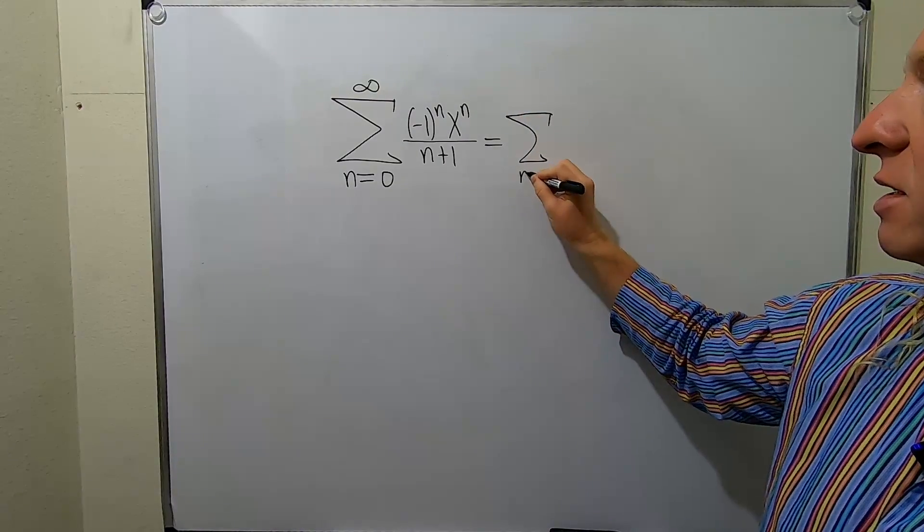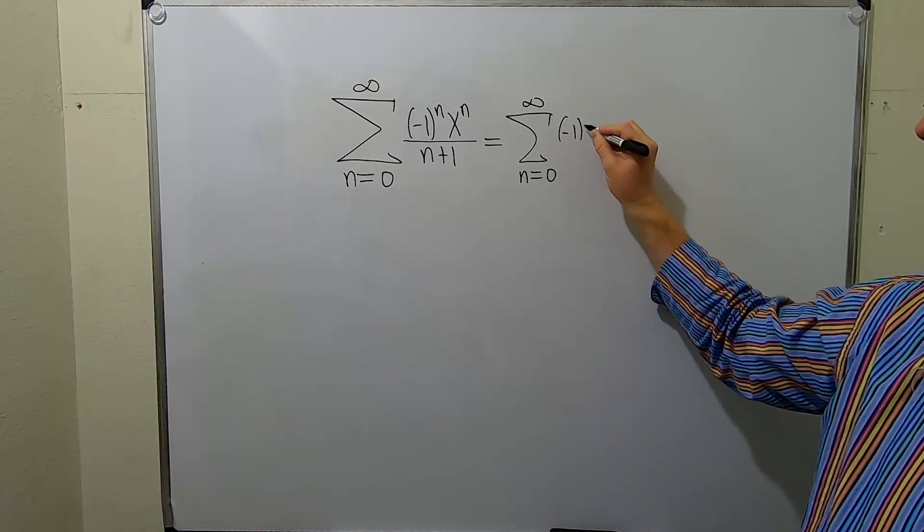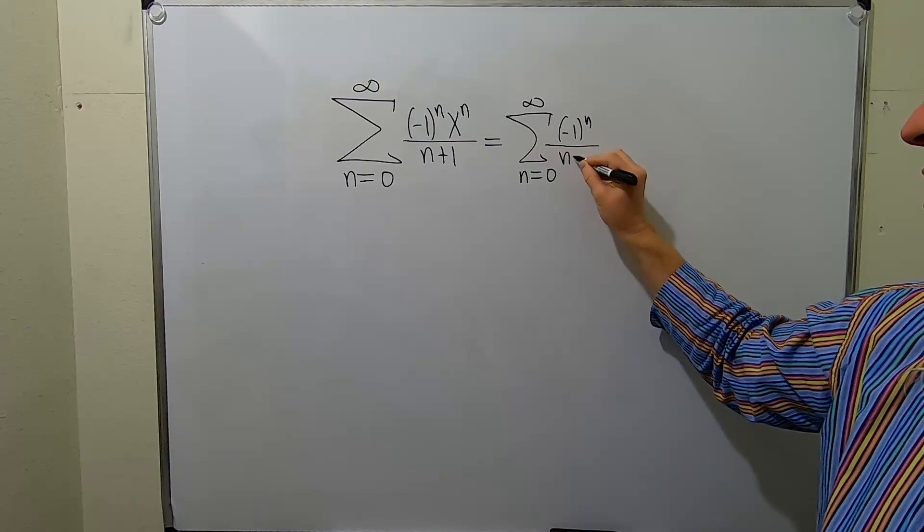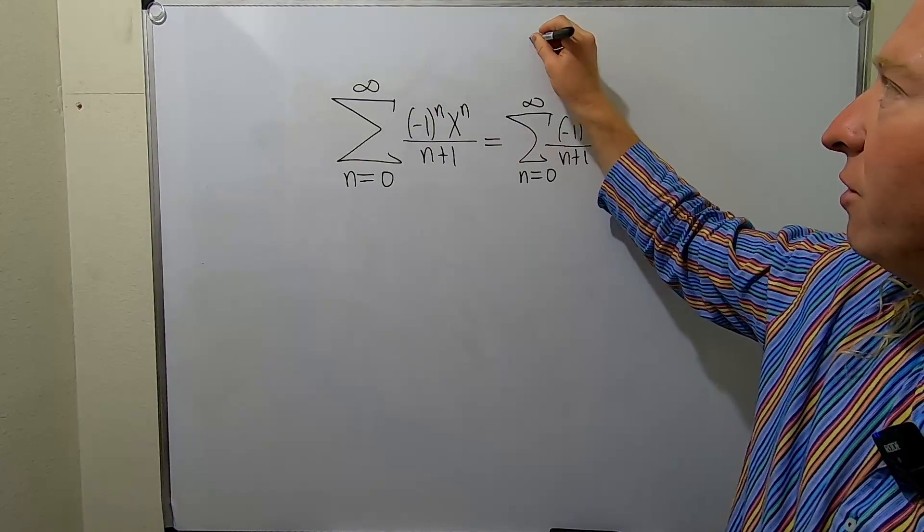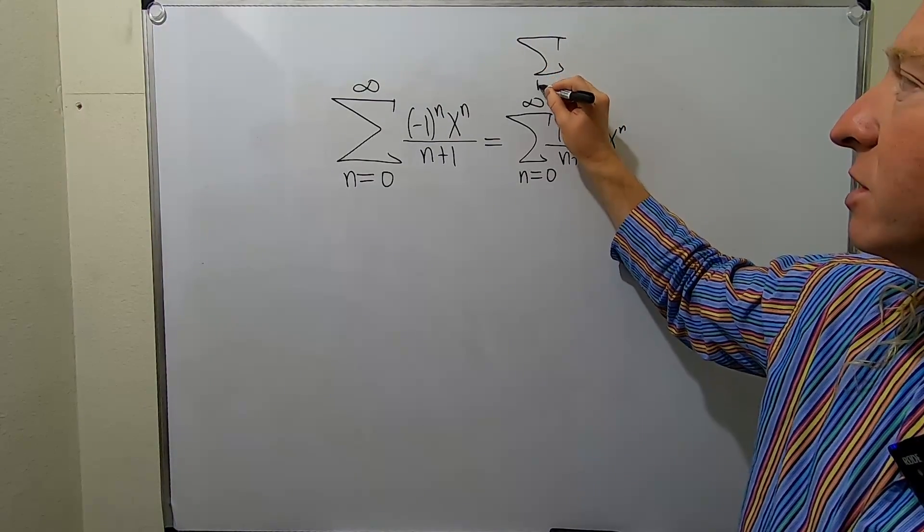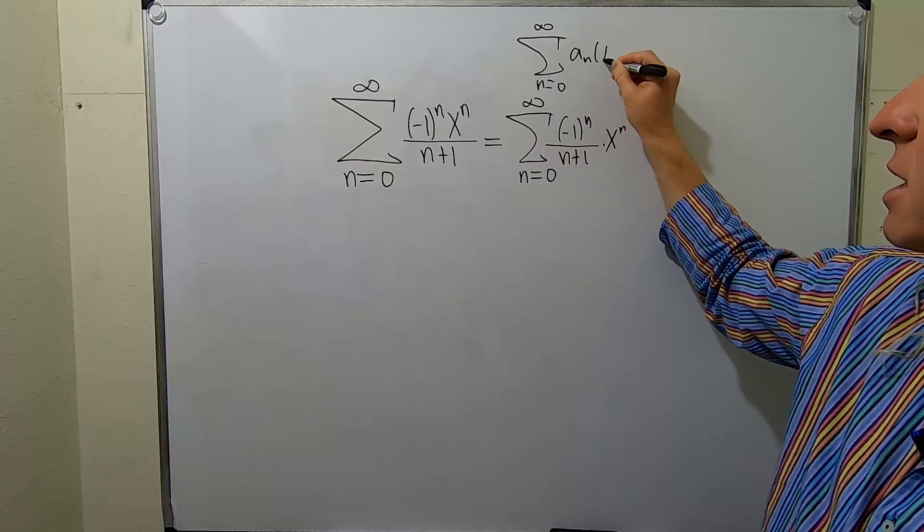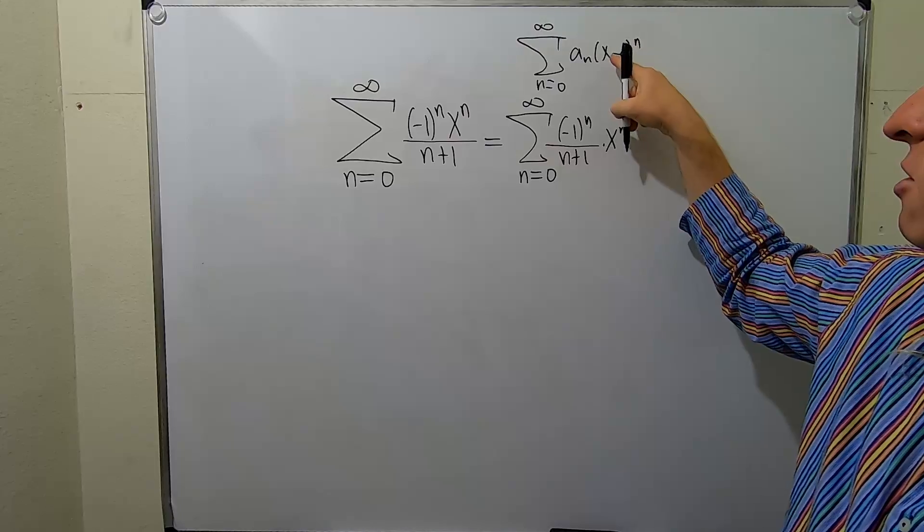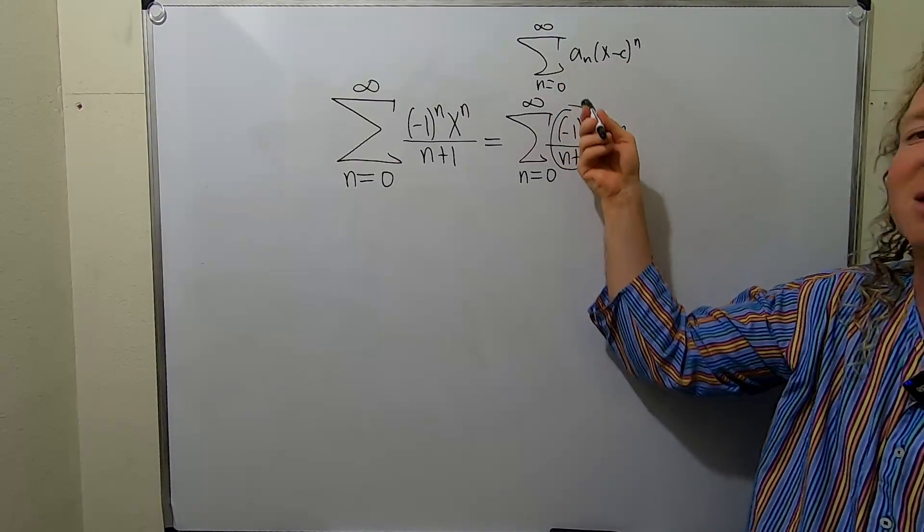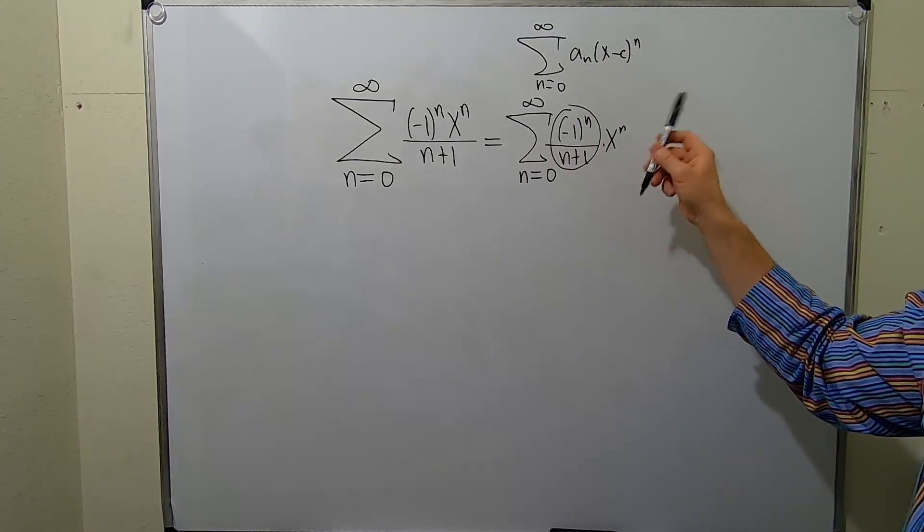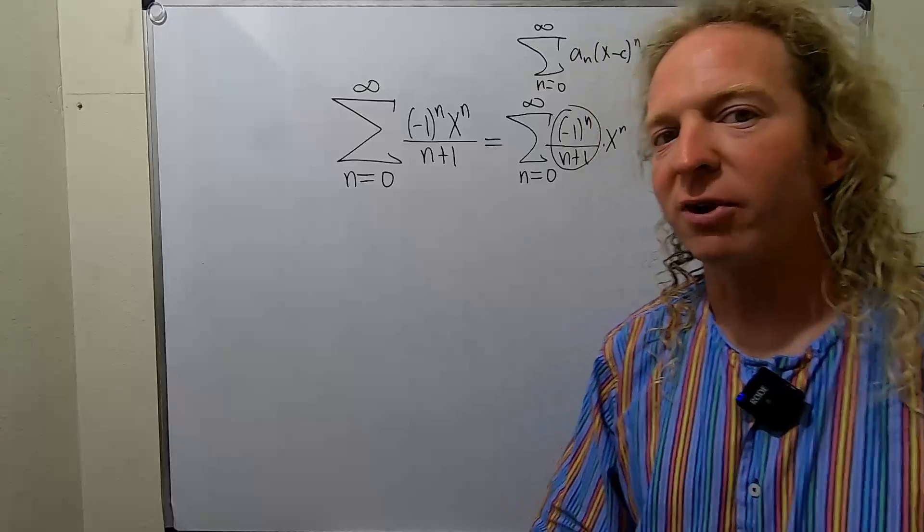This can be written as the infinite sum from zero to infinity of negative one to the n over n plus one times x to the n. Recall that the general form of a power series is a sub n times x minus c to the n. You see here the x minus c, the c is zero. This piece here would be your a sub n. So the center of this power series is zero. That's important when you're trying to find the radius.